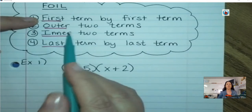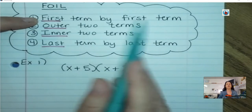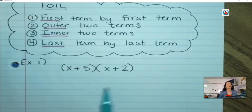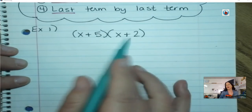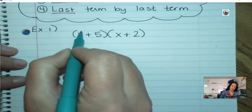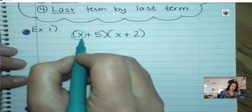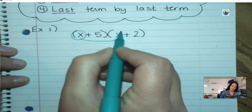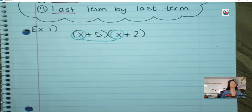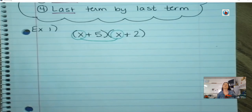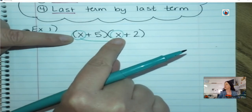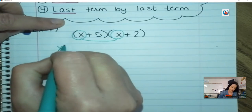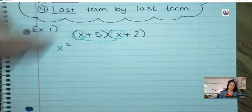So first you're going to multiply the first term by the other first term. There are two binomials right now, or two polynomials. You're going to multiply the first term by the other first term — x times x is x squared.